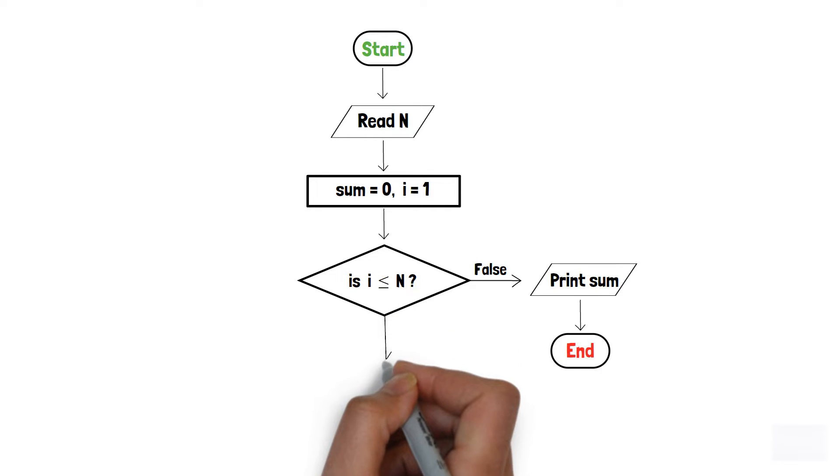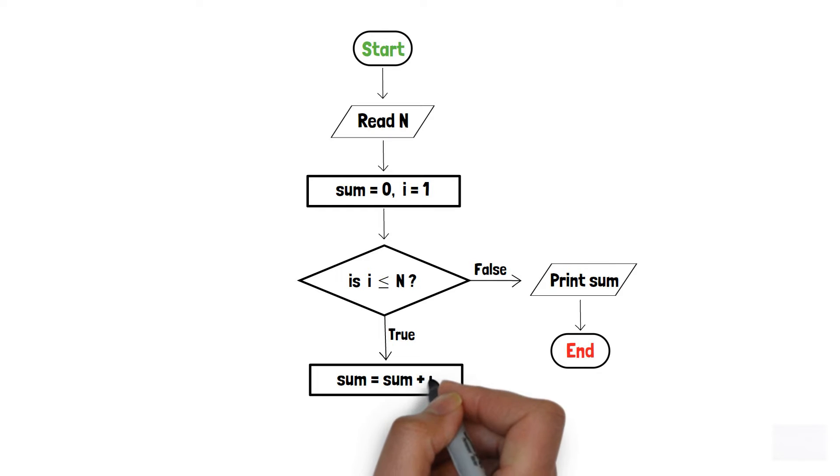If i is less than or equal to n, then we will implement the process box and increment the sum by i. Additionally, we will also increment i by 1 with another process box.